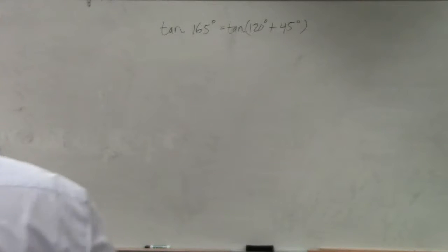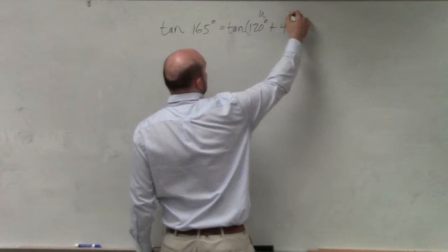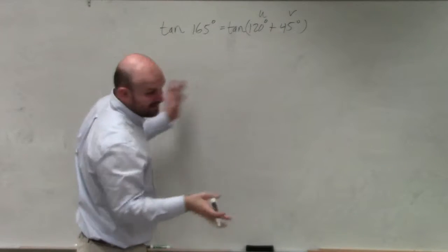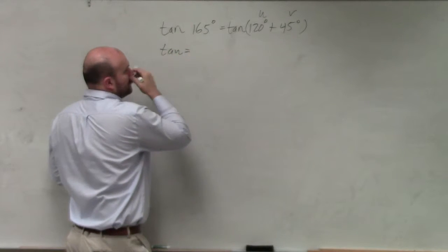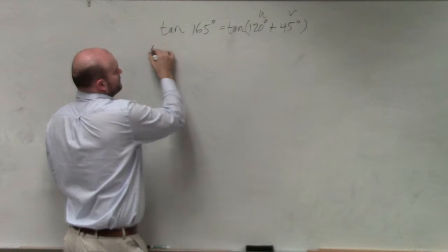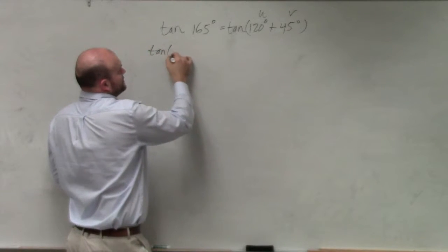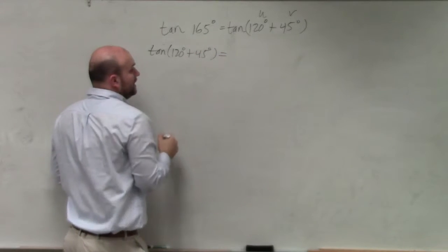For this example, guys, we obviously have an addition problem. And you want to label your u and your v. So therefore, based on my formula for the tangent, I am going to have tangent of 120 degrees plus 45 degrees is going to equal,